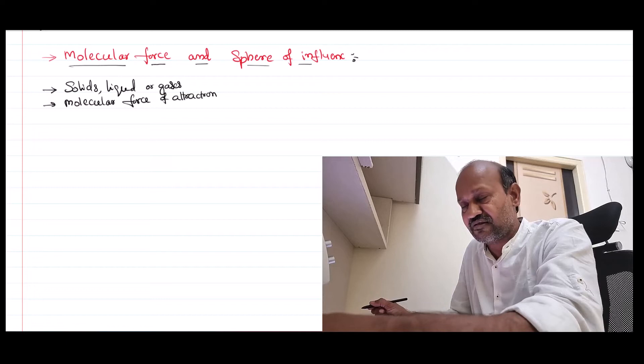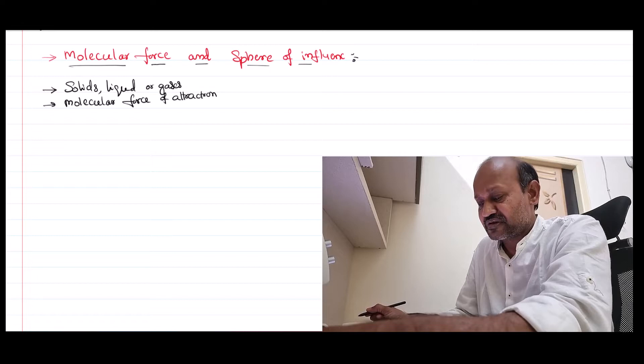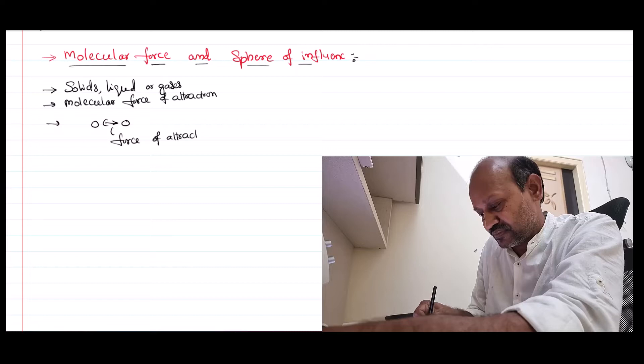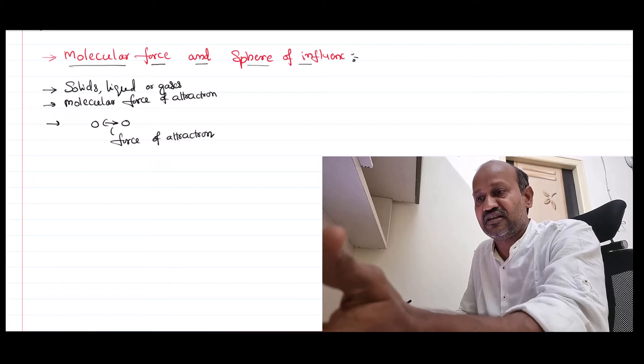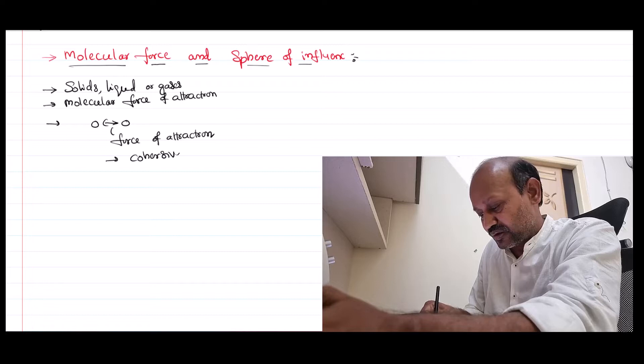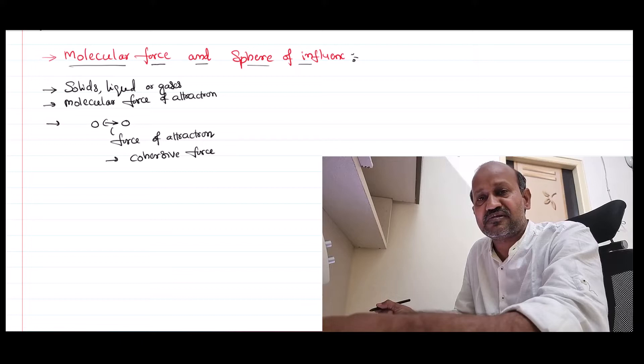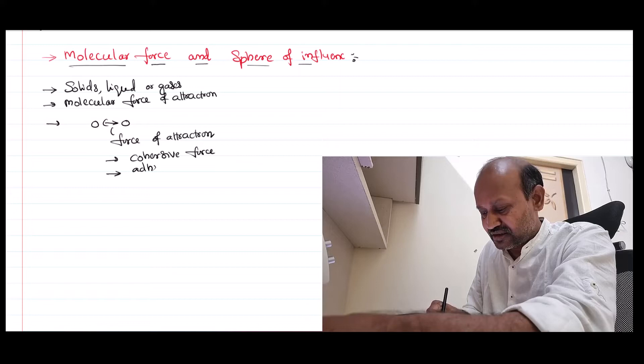These molecules have a kind of force of attraction between them — between one molecule and another there is a force of attraction. If the molecules are of similar nature, for example between an iron molecule and another iron molecule, that is called a cohesive force of attraction. If the molecules are of different nature — say your skin molecules and the iron molecules — that force of attraction is called an adhesive force of attraction.